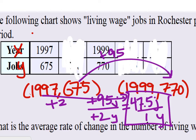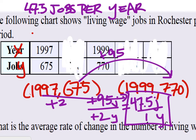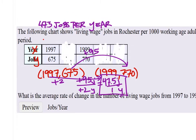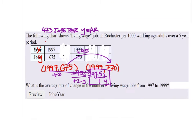How did you get the 47.5? You could write it like that as well. On the computer, they just want you to fill in the blank there. So they've already said that it's jobs per year.